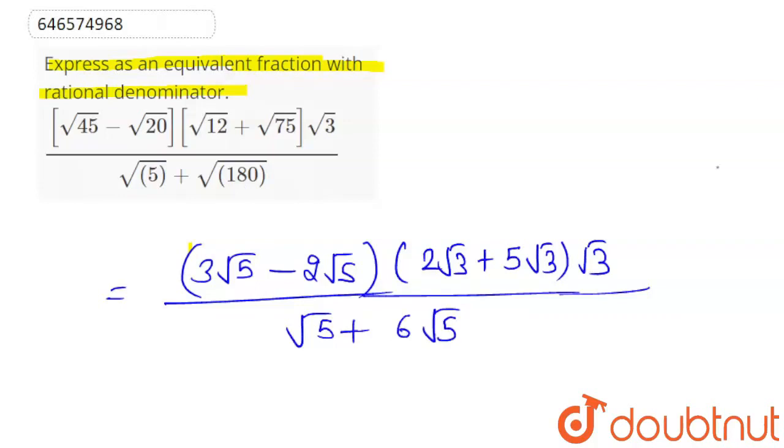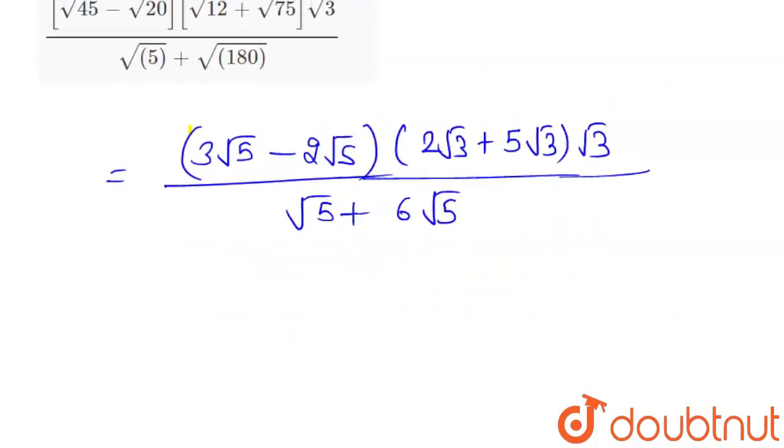We have to solve this. Taking root 5, we have root 5 in the numerator and root 5 in the denominator. The root 3 terms are also present.